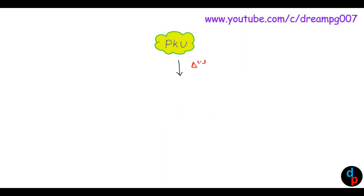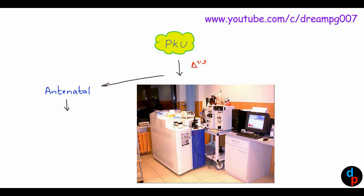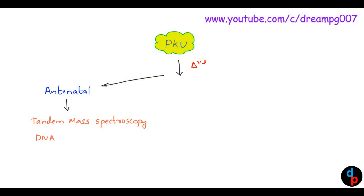How to diagnose phenylketonuria? It can be diagnosed antenatally with the help of tandem mass spectroscopy and DNA probe method. After birth, it is diagnosed with the help of a screening test called the Guthrie test.